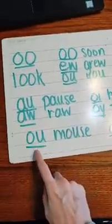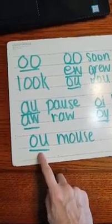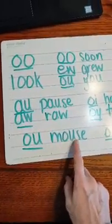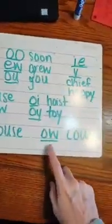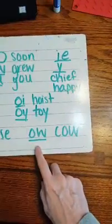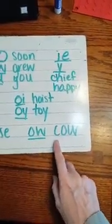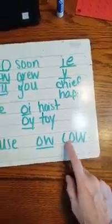Let's go down here. What sound? Ow. What word? Mouse. Good job. What sound? Yes, ow. What word? Cow.